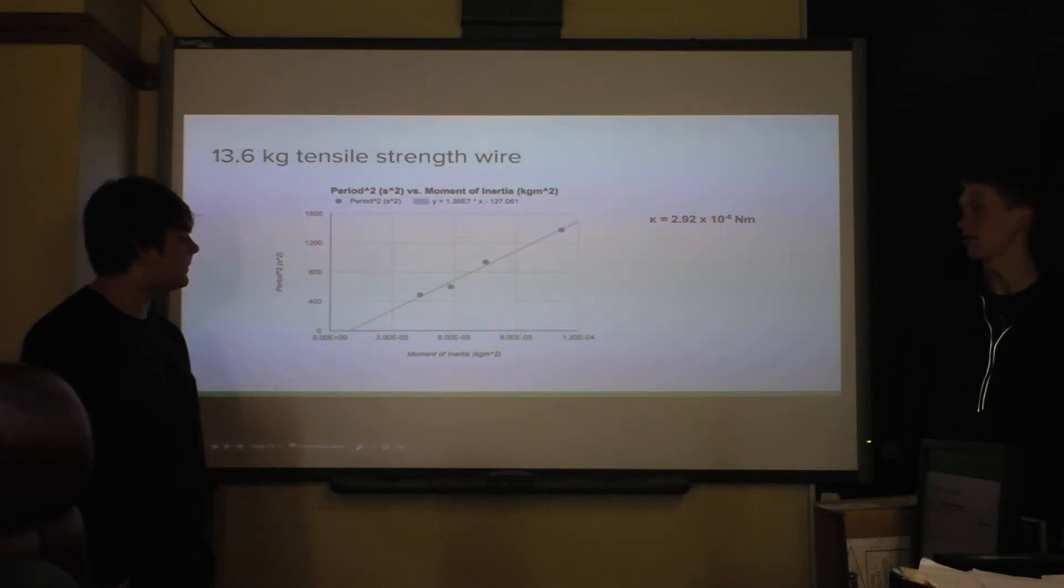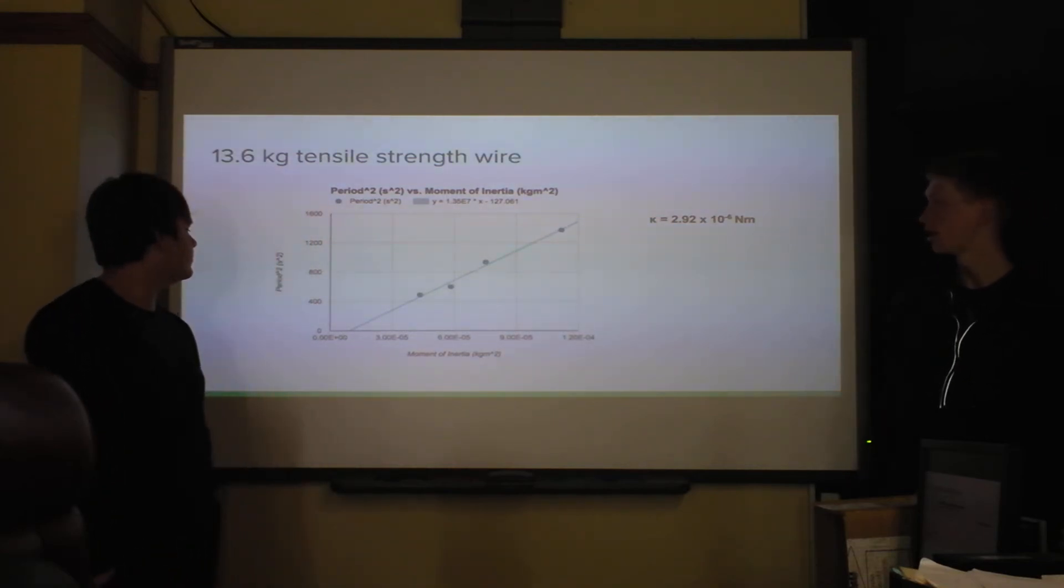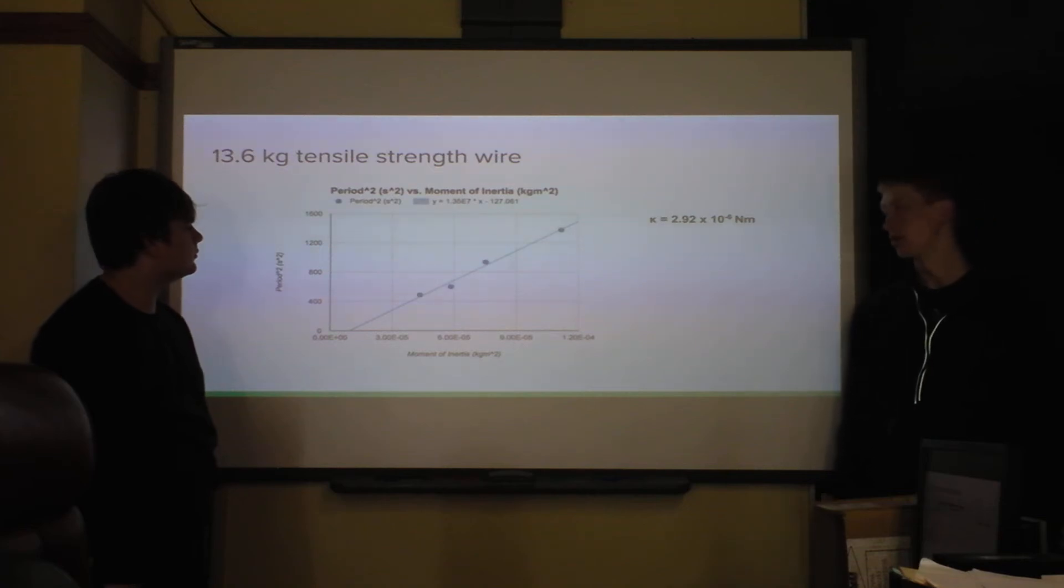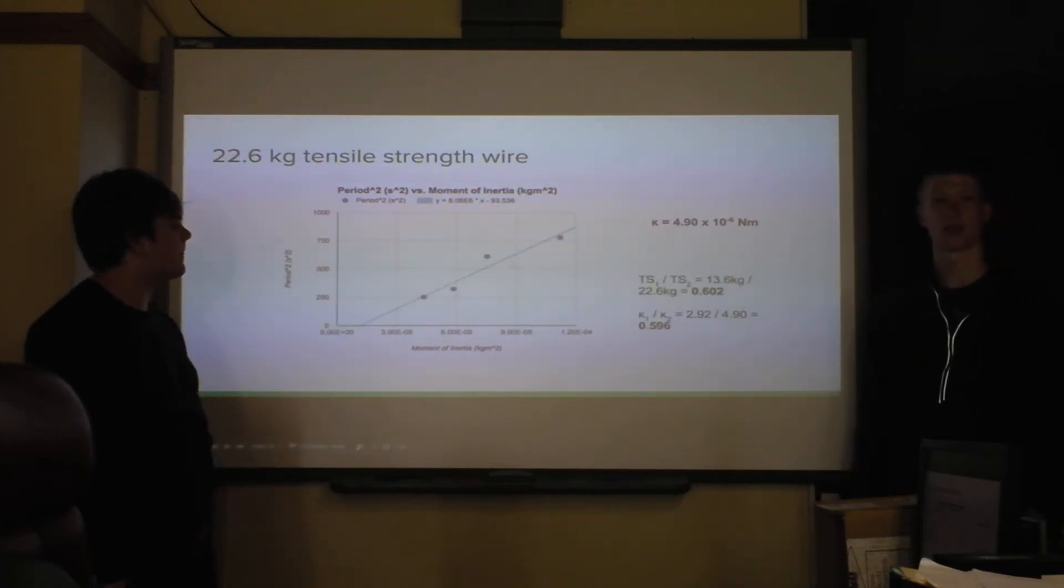And then for the second part, we tested two strengths, tensile strengths of fishing line. And this one was 13.6 kilograms. And once again, there was a really fairly linear graph that was produced by this. And then we also tested a stronger tensile strength. And the torsion constant increased as well.